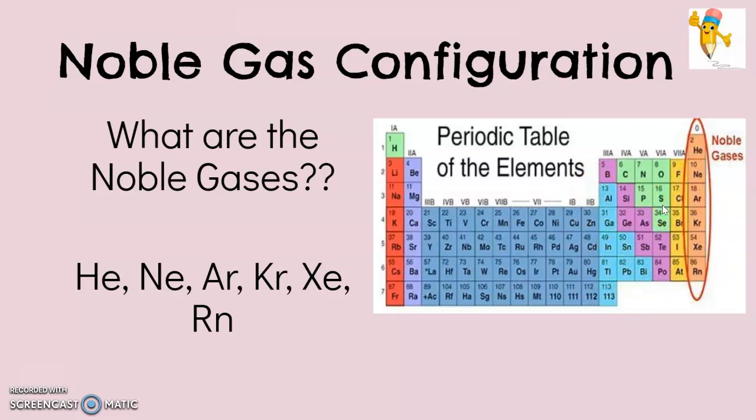So we know the final part of that code is going to be 3p4 because it's in P block and it's the fourth element, right? So if we were going to do the full configuration, remember we have to start at hydrogen, and we have to go all the way through until we get to sulfur. So it would be 1s2, 2s2, 2p6, 3s2, 3p4.